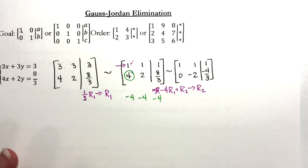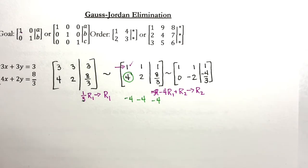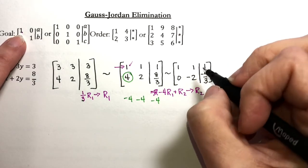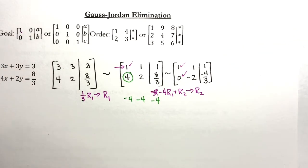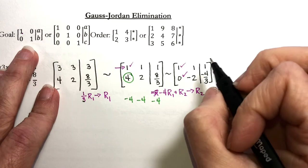And eight thirds minus four gives me negative four thirds. We're making progress. So now what do we have? We had the one we needed. We have the zero we need. And now our third step is to get a one right here.